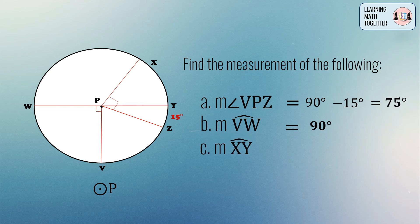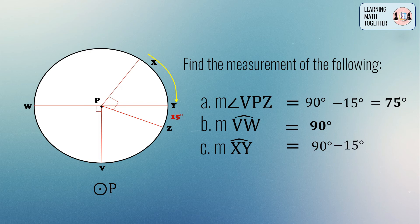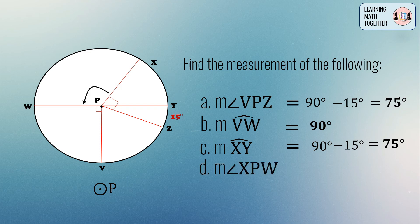For letter C, find the measurement of arc XY. The sum of arc XY and arc YZ is 90 degrees, because this is the intercepted arc of the right angle XPZ. So we subtract: 90 degrees minus 15 degrees equals 75 degrees. Therefore, the measurement of arc XY is equal to 75 degrees.